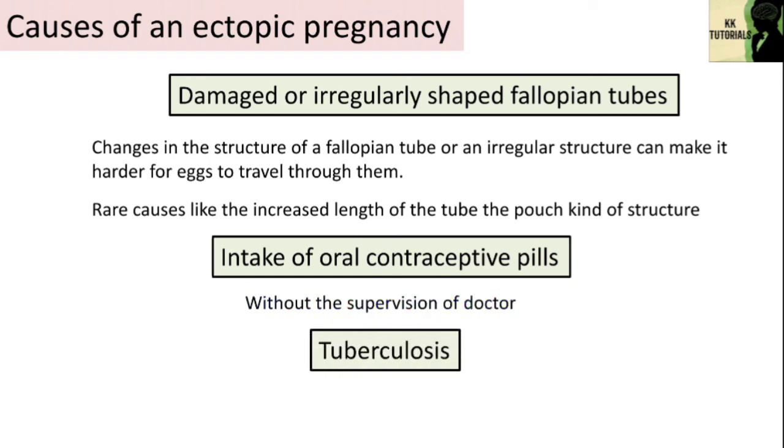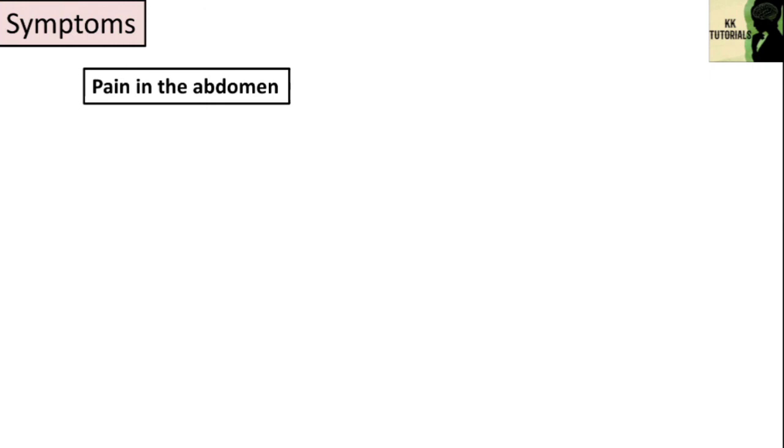Tuberculosis (TB) also affects the uterus and tubes, leading to increased risk of ectopic pregnancy. Regarding symptoms: you may not notice any symptoms at first. Up to 10 percent of women with ectopic pregnancy have no symptoms, and one third have no medical signs. Most of the time an ectopic pregnancy happens within the first few weeks of pregnancy, and you might not even know you are pregnant.